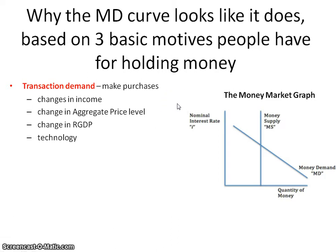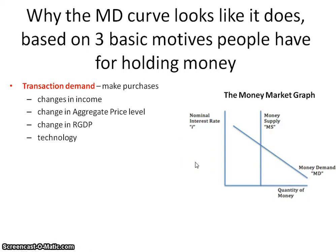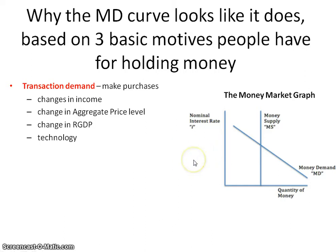Transaction demand is all about consumers making purchases. They might increase their money demand as their income goes up, because they'll be able to consume more. Things might become more expensive due to a change in the aggregate price level, and as a result they're going to need more money. A change in real GDP and technology also go along with that, as an increase in final goods and services means more money is being spent.